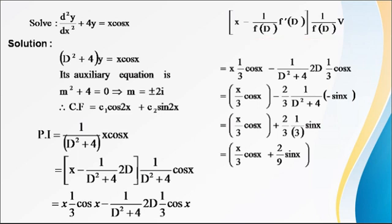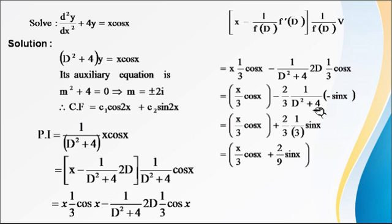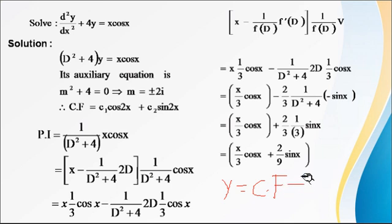Here D means derivative, so find the derivative of cos(x), which is −sin(x). Again, replace D² with −a², where a = 1, so −1 + 4 = 3. Therefore 3 × 3 = 9, giving (2/9)·sin(x). The general solution is y = CF + PI, so write the CF and PI values. That is the complete solution of the given differential equation.